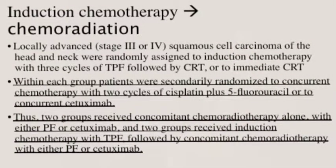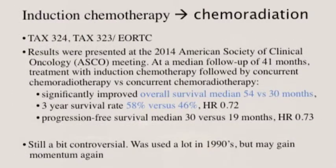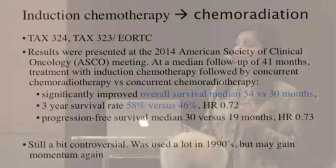Coming to the concept of induction chemotherapy followed by chemoradiation — this is something we actually used a lot in the 1990s. Then through the 2000s it kind of went down a little bit, but most recently in 2014 we had a really nice trial that matured. So it's starting to gain momentum again. It does tend to get more toxic and is a lot more involving, but basically it is initial chemotherapy for three cycles with three drugs together, and then you go on to doing chemotherapy plus radiation. It is a very intensive and very long treatment course, but it did show considerable improvement — 58% versus 46% — so I think this is going to gain a little bit more momentum as we go forward.